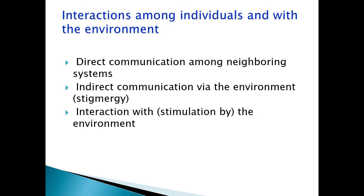Interactions among individuals and with the environment — three types: first, direct communication among neighboring systems; second, indirect communication via the environment, called stigmergy, which is the second principle of SI; and third, interaction with or stimulation by the environment directly.